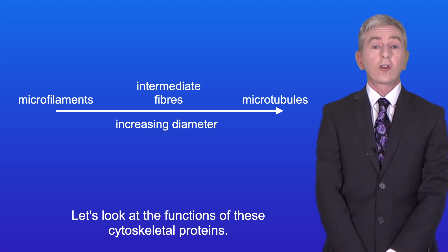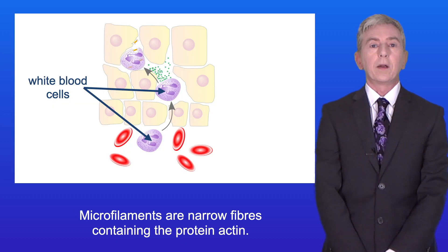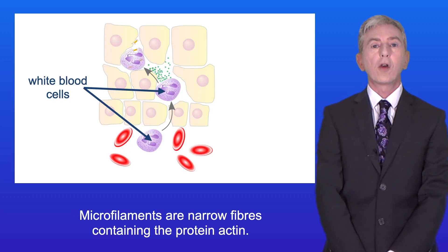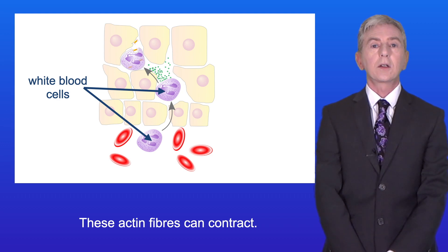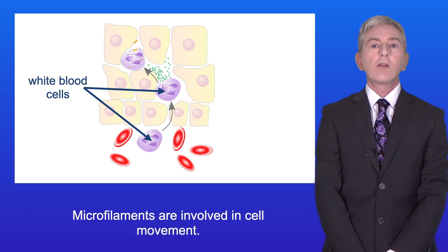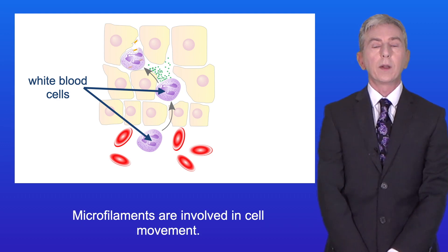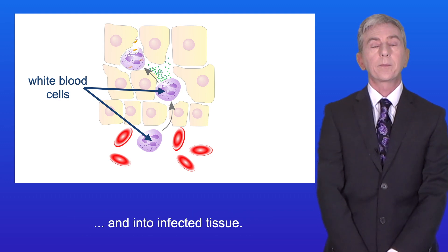So let's look at the functions of these cytoskeletal proteins. Microfilaments are narrow fibers containing the protein actin, and these actin fibers can contract. Microfilaments are involved in cell movement — for example, when white blood cells move out of the bloodstream and into infected tissue.